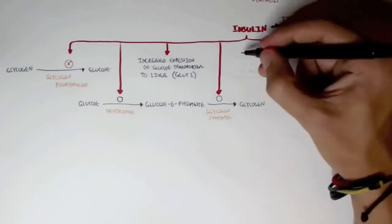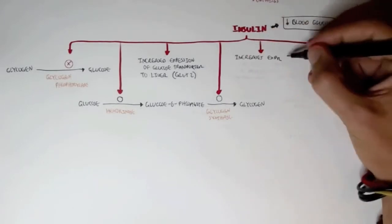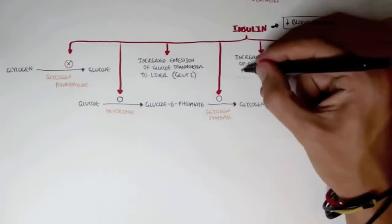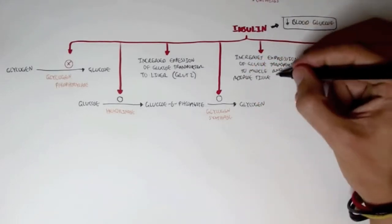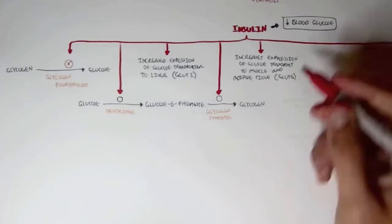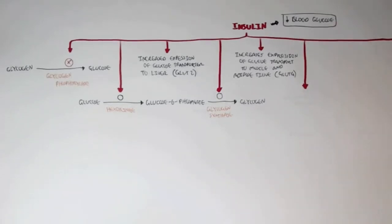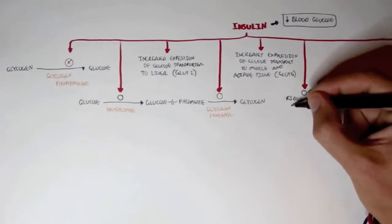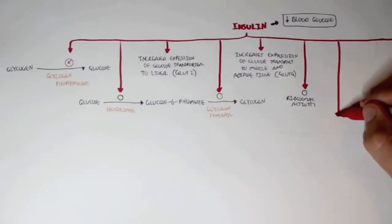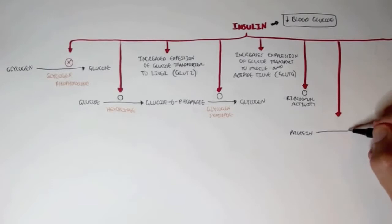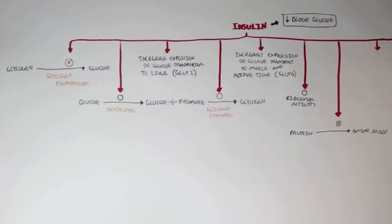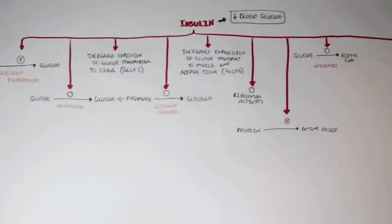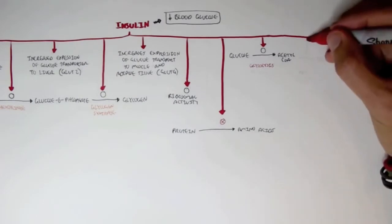Insulin also increases the expression of GLUT4 transporters in the muscle and adipose tissue. Insulin stimulates ribosome activity to synthesize proteins, and also inhibits protein degradation because it wants to store excess energy and amino acids. Insulin promotes the conversion from glucose to acetyl-CoA, thereby promoting glycolysis.